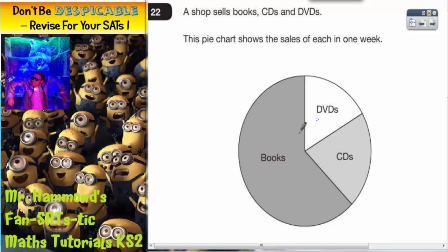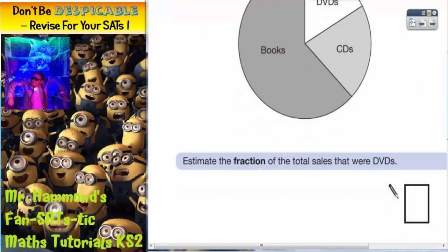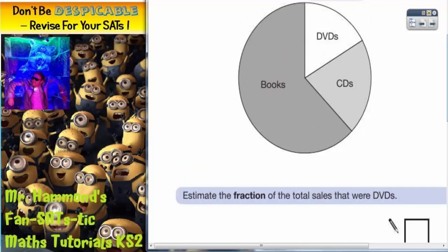So as you can see, books is the most popular section, DVDs is slightly smaller, and CDs is kind of the middle size section. Let's scroll down and see what we've got to do. It says estimate the fraction of the total sales that were DVDs.